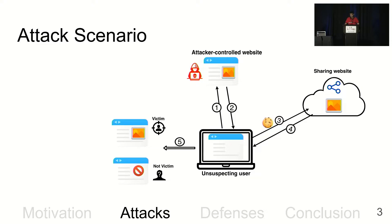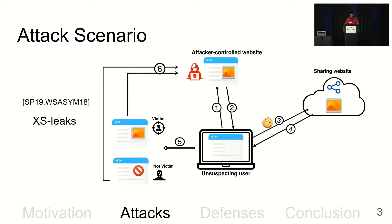Normally, the outcome of loading the resource cannot be learned by the attacker website because of isolation technologies such as Same-Origin Policy, SameSite cookies, X-Frame-Options header, or Cross-Origin Opener Policy. However, it has been shown that the attacker can bypass these technologies by cross-site leaks, which are essentially software bugs in web browsers.